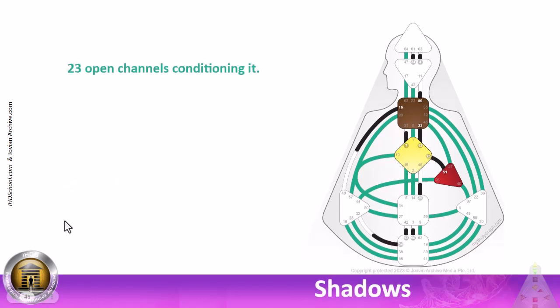23 open channels conditioning this person. So there's this personality with its two definitions and its bright, shiny G-Center, broadcasting its identity. And then there are open channels conditioning all of this. So the other side of this is there's a beautiful side. If the conditioning and shadow state is ugly. The beautiful side is that each and every one of those 23 open channels represents a potential for wisdom.